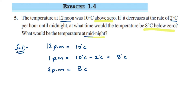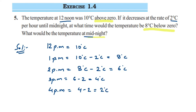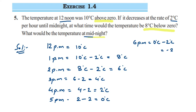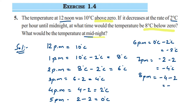Continuing: at 3 p.m. it's 6 minus 2 = 4 degrees Celsius; at 4 p.m., 4 minus 2 = 2 degrees Celsius; at 5 p.m., 2 minus 2 = 0 degrees Celsius; at 6 p.m., 0 minus 2 = minus 2 degrees Celsius; at 7 p.m., minus 2 minus 2 = minus 4 degrees Celsius; at 8 p.m., minus 4 minus 2 = minus 6 degrees Celsius; at 9 p.m., minus 6 minus 2 = minus 8 degrees Celsius. So at 9 p.m. the temperature is minus 8 degrees Celsius.